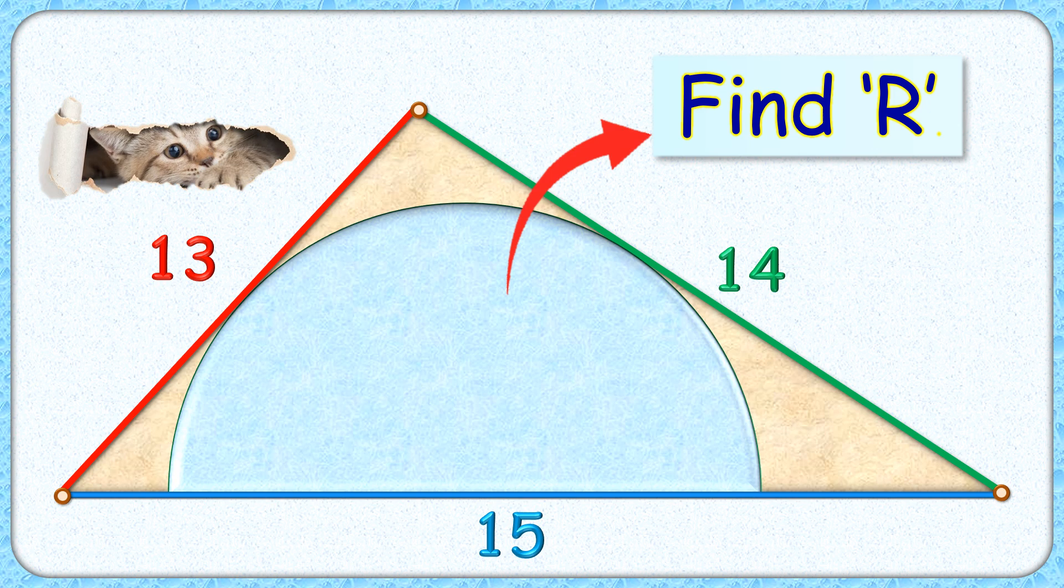In this interesting question, given is a triangle with side lengths 13, 14, and 15 centimeters. Inscribed in it is a semicircle which is touching the triangle at two points. Now the exciting part is, with this given data, we have to find the radius of this semicircle.